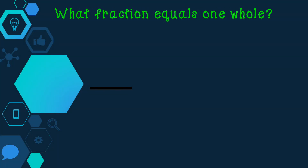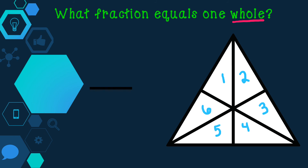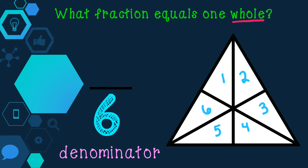What fraction equals 1 whole? Remember, whole means entire or all, which in this case is the entire triangle. To figure out the fraction of the whole triangle, we are first going to start by counting the number of equal parts the triangle has been partitioned or divided into: 1, 2, 3, 4, 5, 6. Since this triangle has been partitioned into 6 parts, this number goes in the denominator. The denominator represents the total number of parts a shape has been partitioned or divided into.